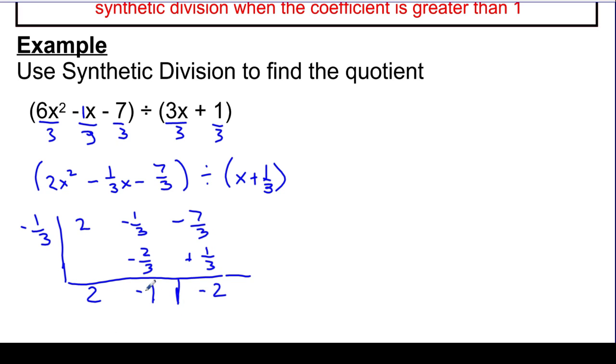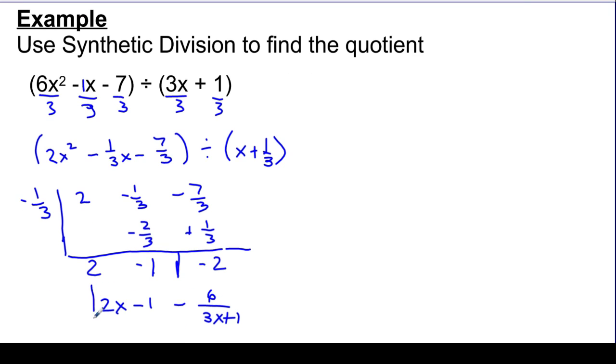So again, let's put up our bar. And this, again, is my coefficient term, which means this is my x to the first term. So this is really 2x - 1. And I multiplied everything up here by – I'm sorry. I divided everything up here by a 3, which means I'm going to multiply this remainder by a 3. And it's going to become minus 6 over 3x + 1. And I would say this right here, this expression, is the quotient with the remainder for the synthetic division.